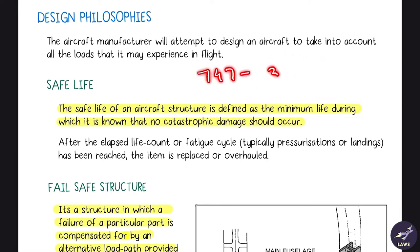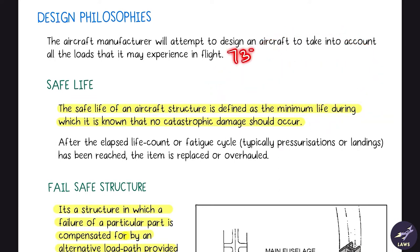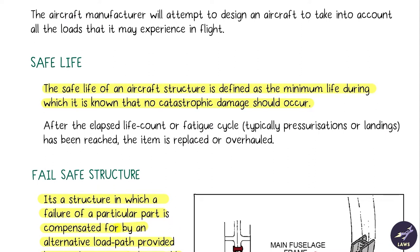So 85,000 times it can get pressurized and depressurized before scrapping the aircraft. 747, it is around 35,000 because it is a long range aircraft. If 737 has 4 takeoffs and landings in the day, 747 will do one. So what is safe life basically? Before it reaches the end of its pressurization cycle, there should be no intrinsic damage. For 737, 85,000 cycles should elapse before there is any internal damage.